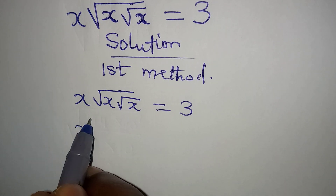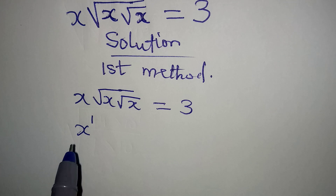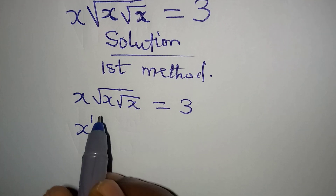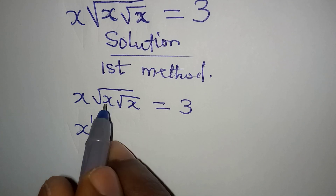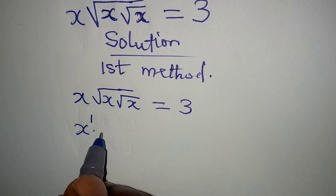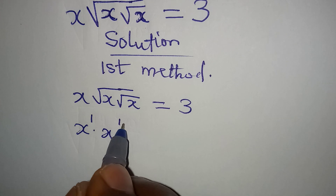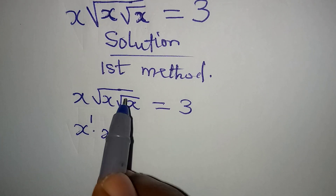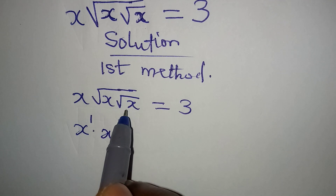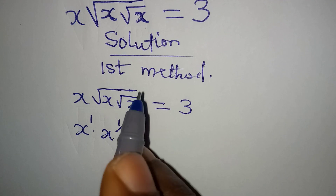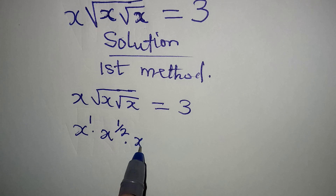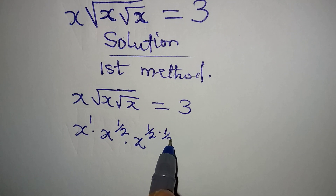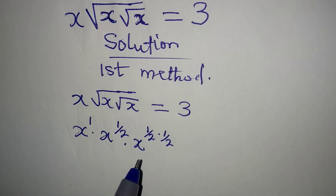This x here has a power of 1. Although we are not expected to write the power, then multiply by this x which is under the first square root, so it's going to be raised to the power of 1 over 2. Then multiply by the third x which is under 2 square root signs, so that means we have x to the power of 1 over 2 multiplied by 1 over 2.